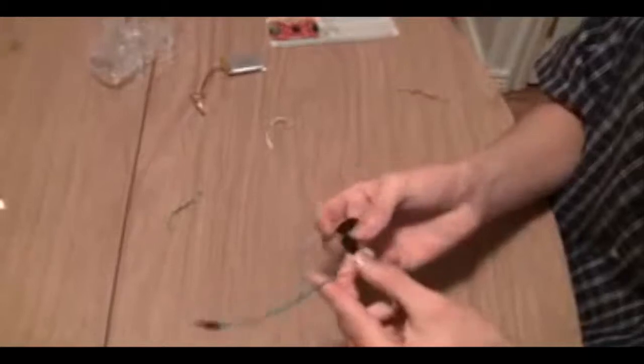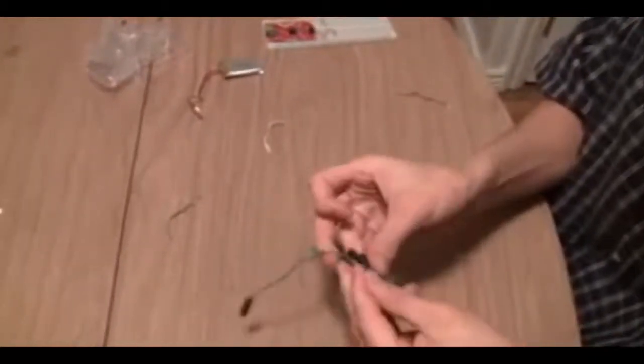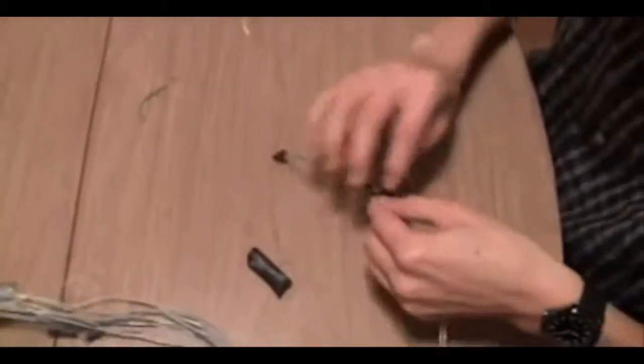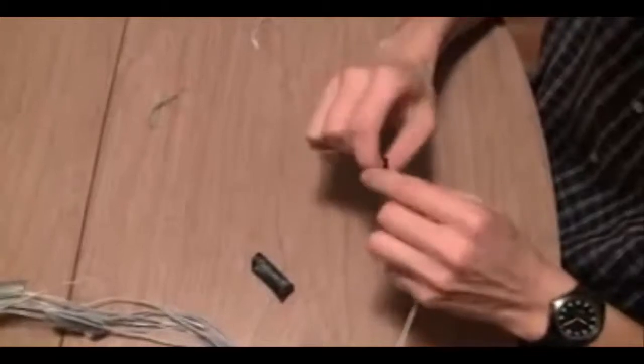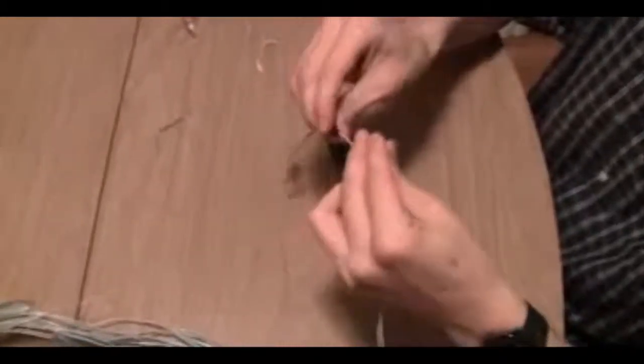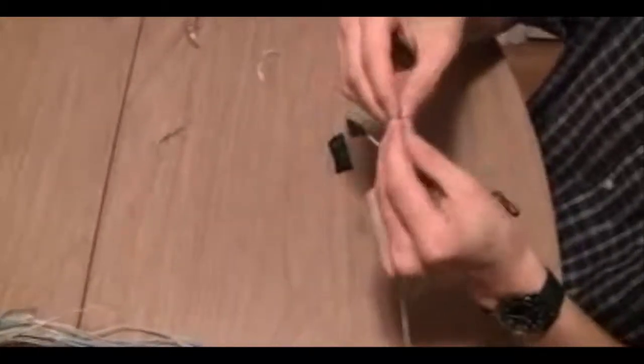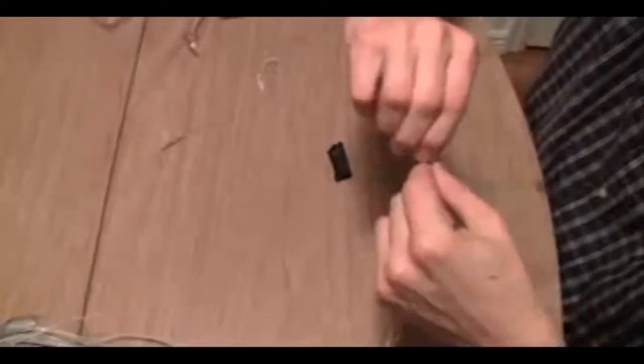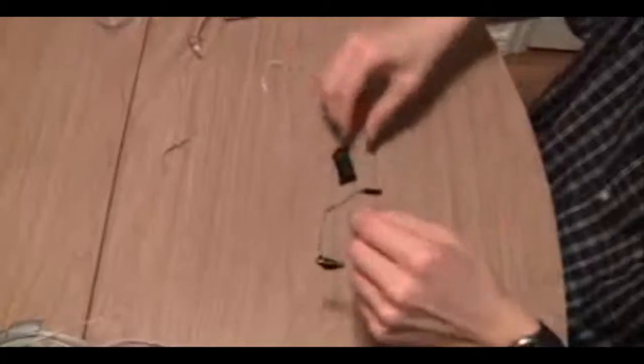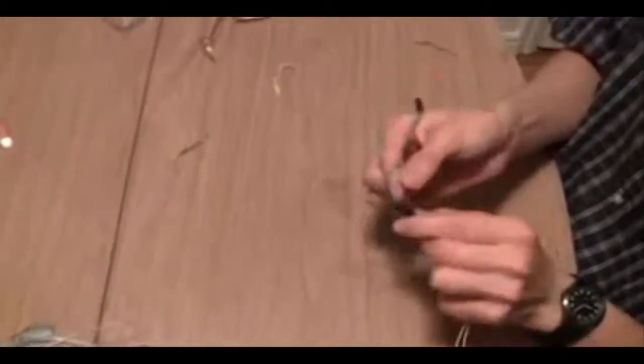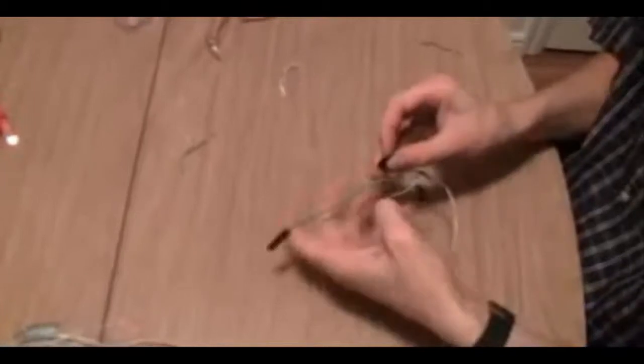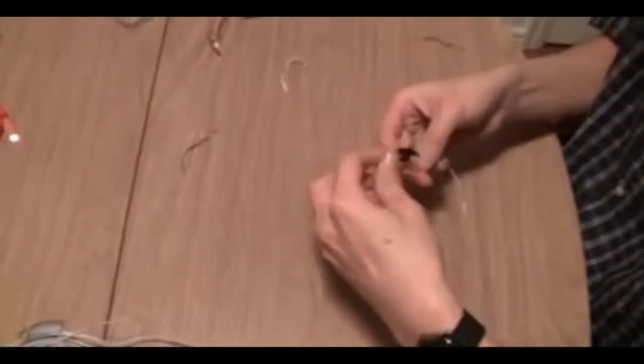When you think you have a solid connection, you'll want to take some electrical tape and wrap the connection so that it doesn't come undone during your measurements.